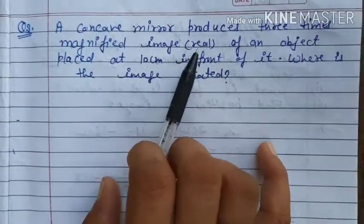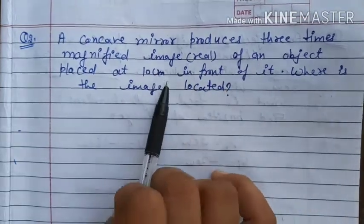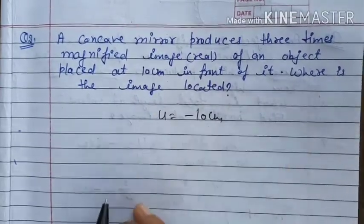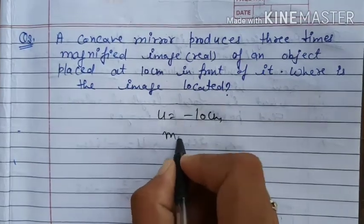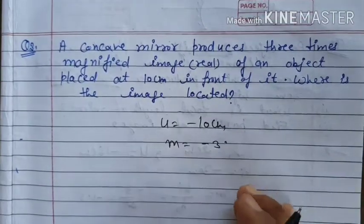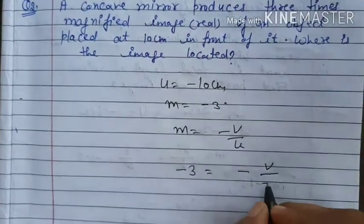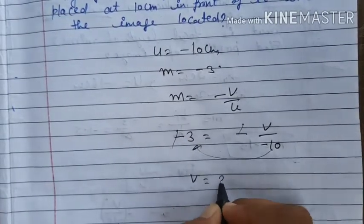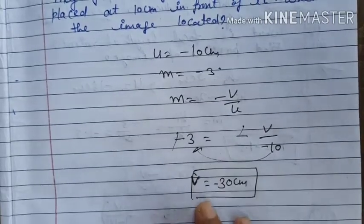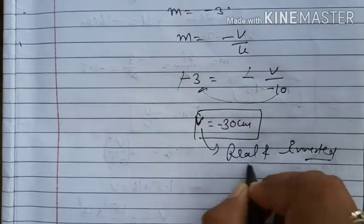Question number three: a concave mirror produces a three times magnified real image of an object placed at 10 centimeters. Since it is a real image, the concave mirror makes it real and inverted. So magnification m = −3. Using m = −v/u: −3 = −v/(−10), so v = −30 centimeters.